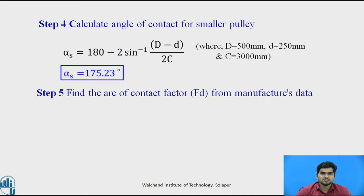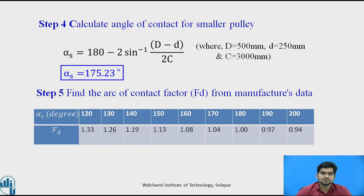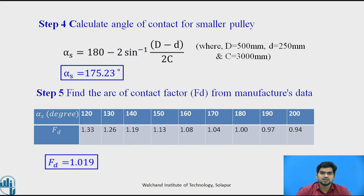In step number 5, calculate the arc of contact factor Fd from the manufacturing data book. The wrap angle αs is found to be 175.23 degrees. From the table, values at 170° and 180° correspond to factors 1.04 and 1.00 respectively. Since 175.23° lies between them, we use interpolation and get Fd = 1.019.